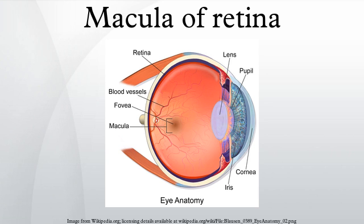Regions: the fovea measures 0.35mm and the umbo measures 0.15mm. Structures in the macula are specialized for high acuity vision. Within the macula are the fovea and foveola, which contain a high density of cones.